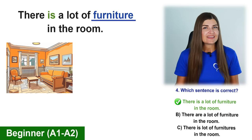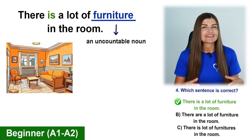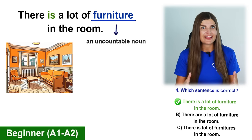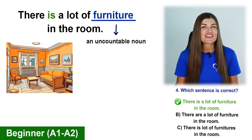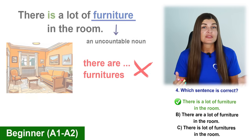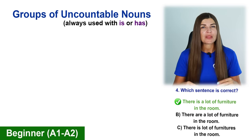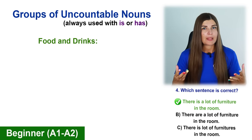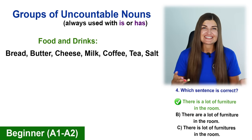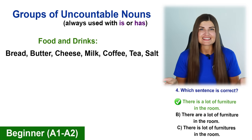The verb to be in this sentence is used in the singular form because furniture is an uncountable noun. We cannot say there are because furniture is singular and it's not used in the plural. There are some groups of uncountable nouns: food and drinks — bread, butter, cheese, milk, coffee, tea, salt, and so on.